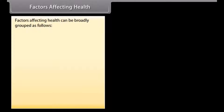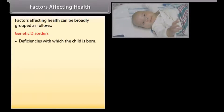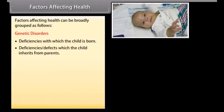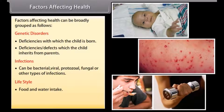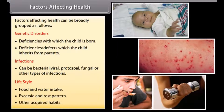Factors affecting health can be broadly grouped as follows: Genetic disorders — deficiencies and defects with which the child is born. Infections — which can be bacterial, viral, protozoal, fungal or other types. Lifestyle — including food and water intake, exercise and rest patterns, and other acquired habits.